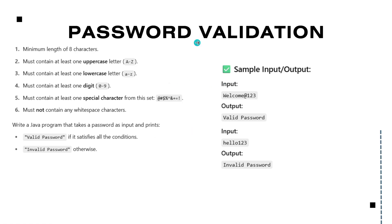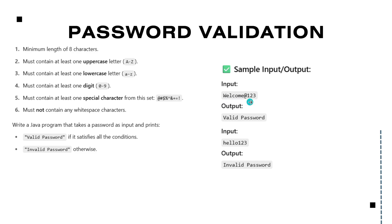Let us see one coding problem: password validation. The conditions for a valid password are: minimum length of eight characters, must contain at least one uppercase and one lowercase letter, one digit, and one special character, and must not contain any whitespace characters. For example, if you get the string 'welcome@123', it is a valid password because its length is more than eight and it satisfies all conditions — uppercase, lowercase, digits, and special characters.